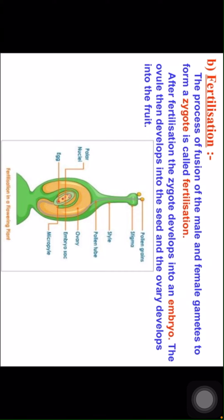Fertilization: the process of fusion of the male and female gametes to form a zygote is called fertilization. After fertilization the zygote develops into an embryo. The ovule then develops into the seed and the ovary develops into the fruit.